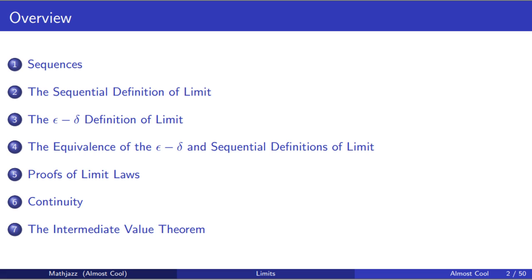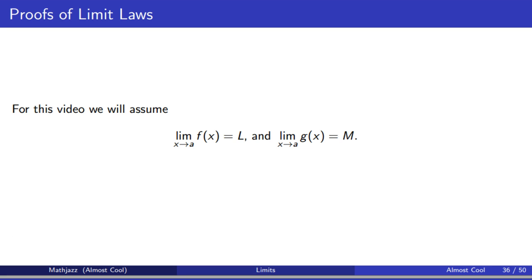In this video, I will state several limit laws one at a time and prove them. We will assume that the limit of f as x goes to a is l, and the limit of g as x goes to a is m. This will apply for the whole video, so I won't state them as hypotheses in the limit laws, but it'll be understood that these limits exist and the values are l and m respectively.